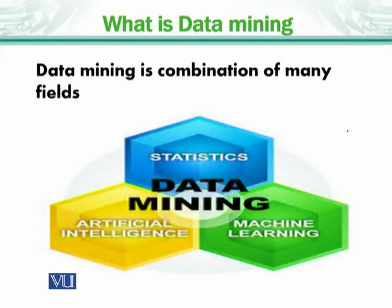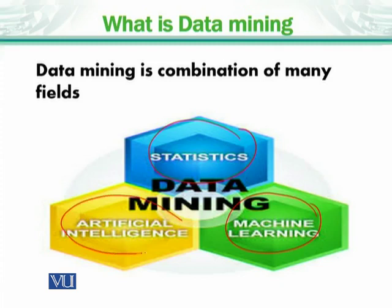In data mining there are many related subjects. Statistics involves working with numbers, values, and training data. Machine learning is an emerging field directly related to data mining and will be a focus of this course. Artificial intelligence is a branch of science that gives computer programs the ability to mimic human intelligence. In addition to these three major subjects, we will also look into some mathematical models during this course.